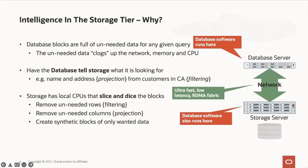Let's talk about intelligent storage. Database blocks typically contain around 8K of information. But depending on the query, a lot of that data is actually unnecessary to satisfy the query. In a traditional architecture, that whole 8K block has to be sent across the wire for the database server to then decide what to do with most of the information in that block. For a simple query — find all names and addresses of customers in California — a traditional architecture passes potentially huge amounts of data covering all 50 states, then discards most of it.